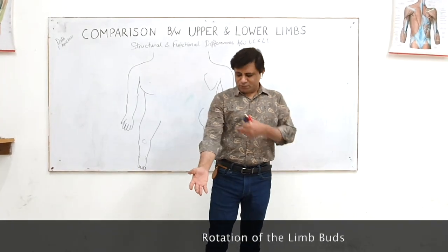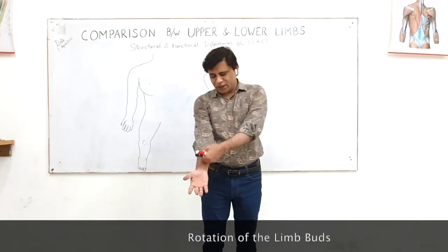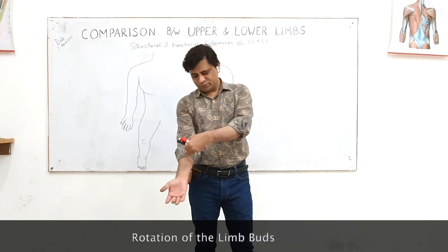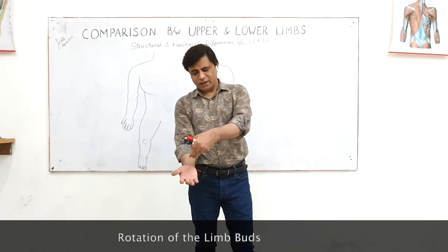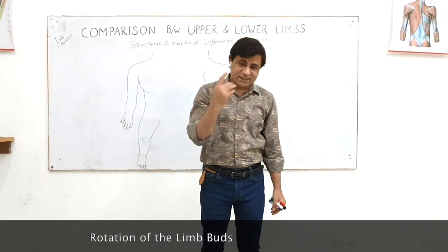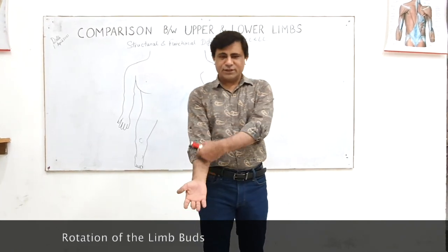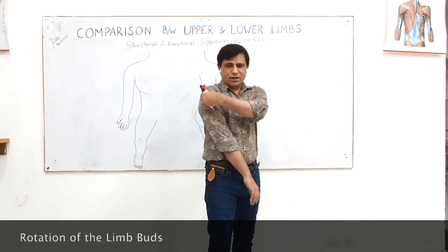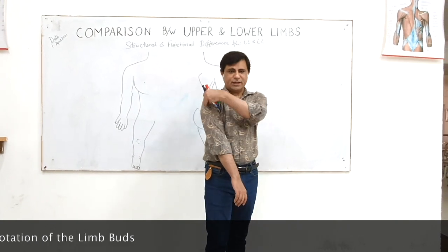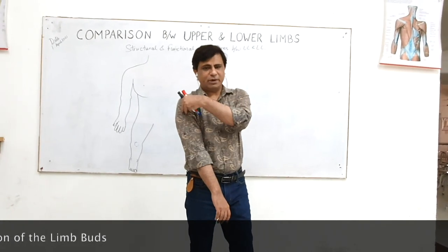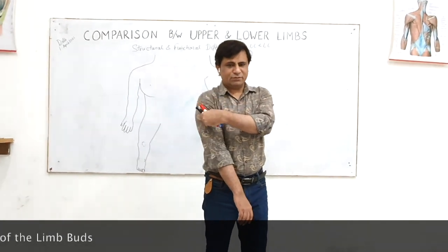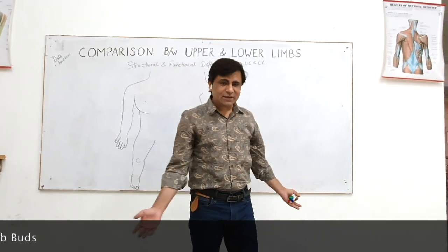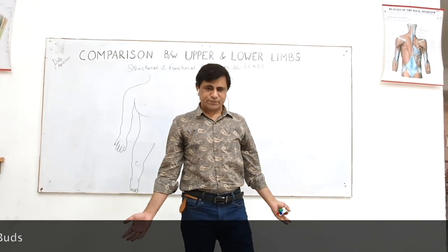With this rotation of the limb buds, the entire compartment of arm, forearm, and palm — they are all flexors. Similarly, the back of the upper limb, back of forearm — all of them are extensor compartments.